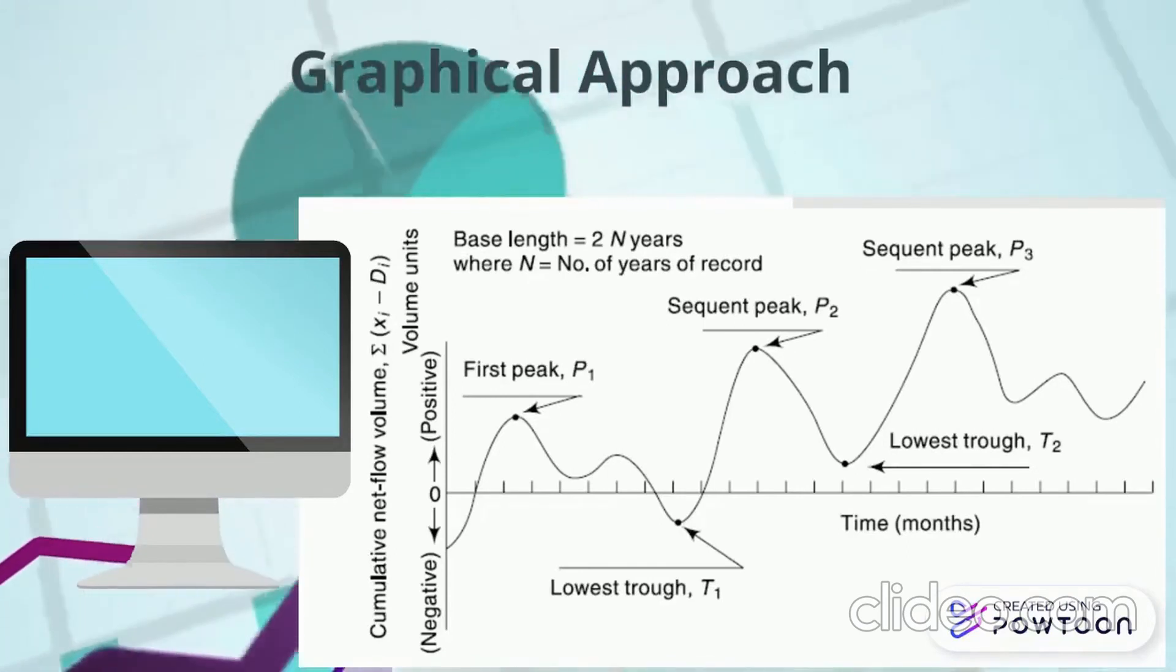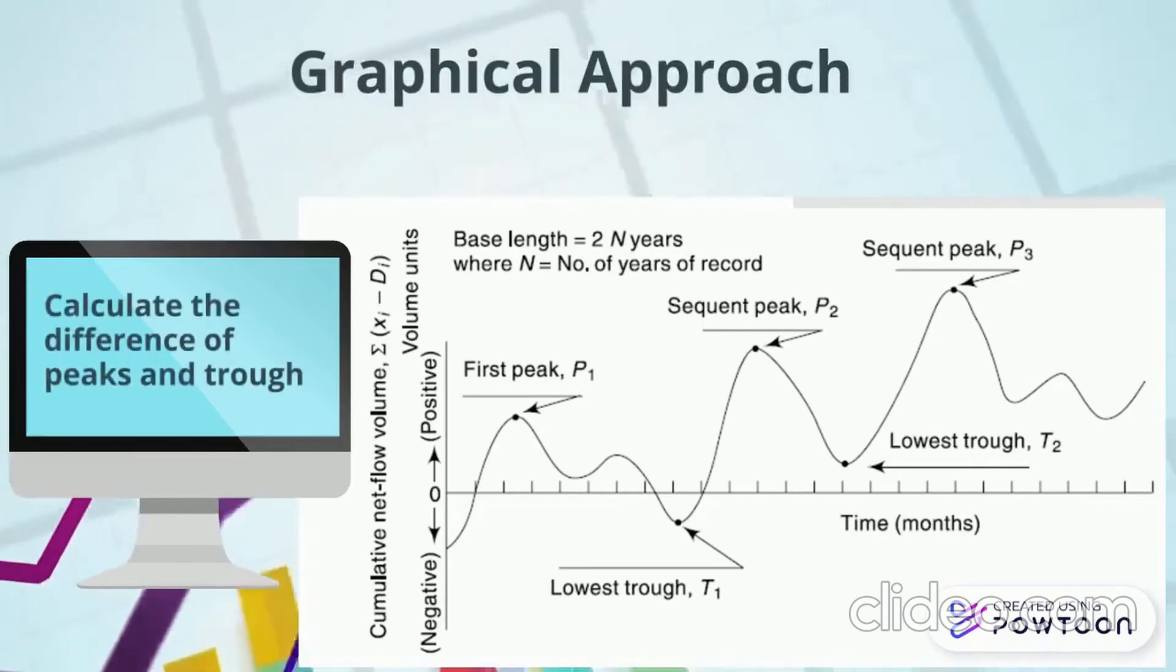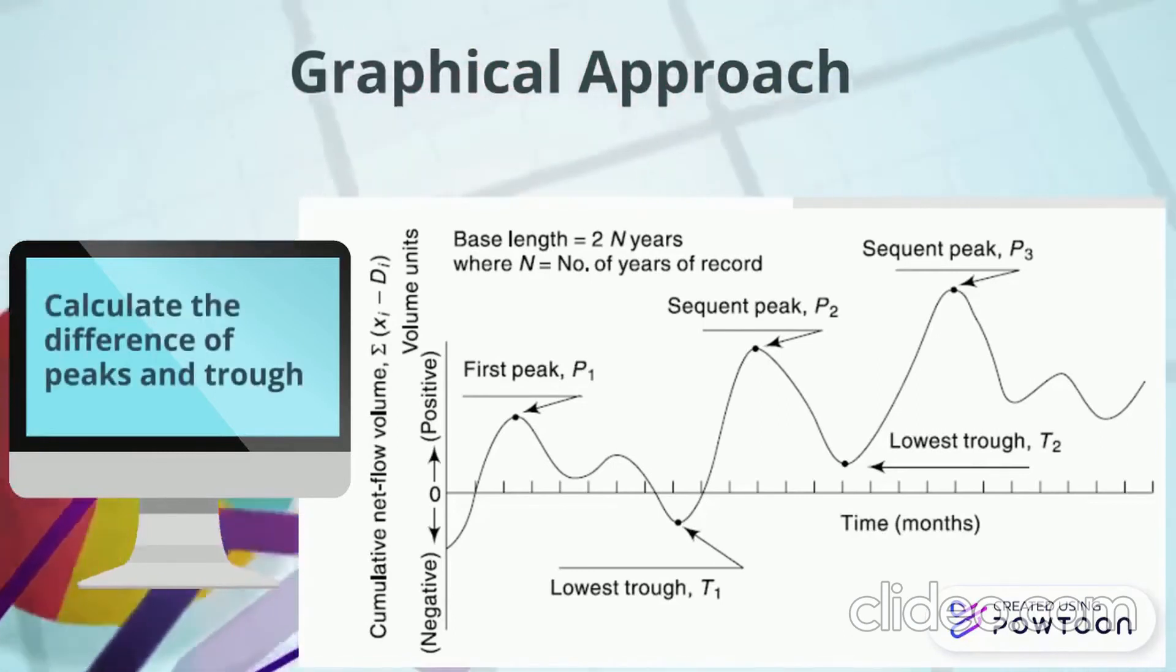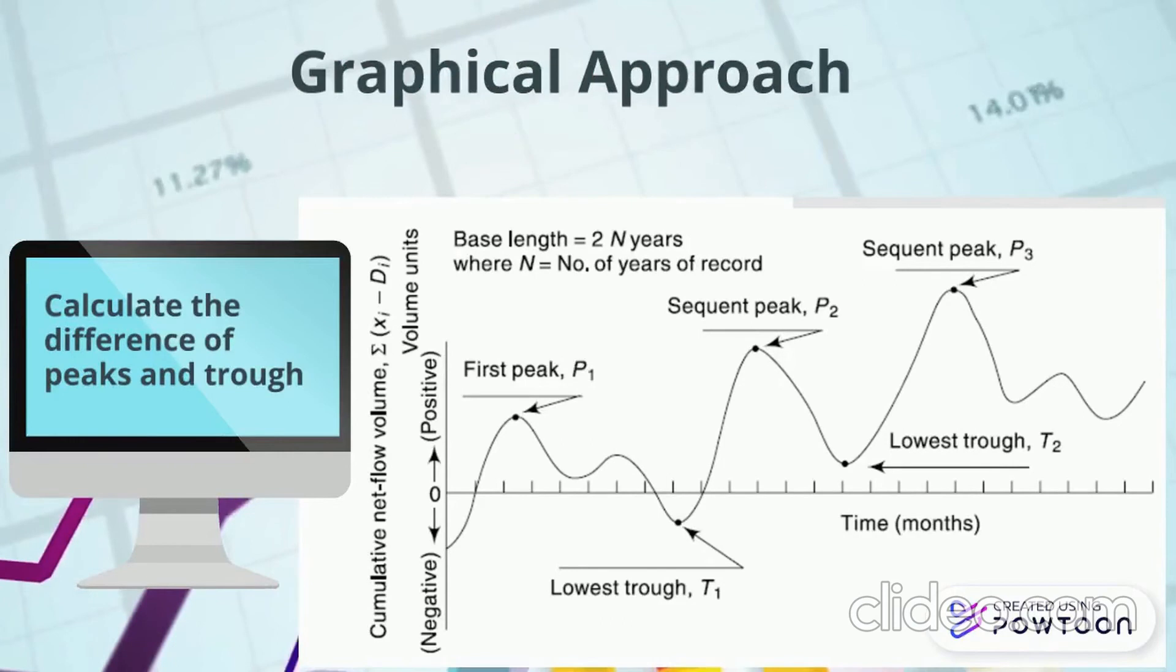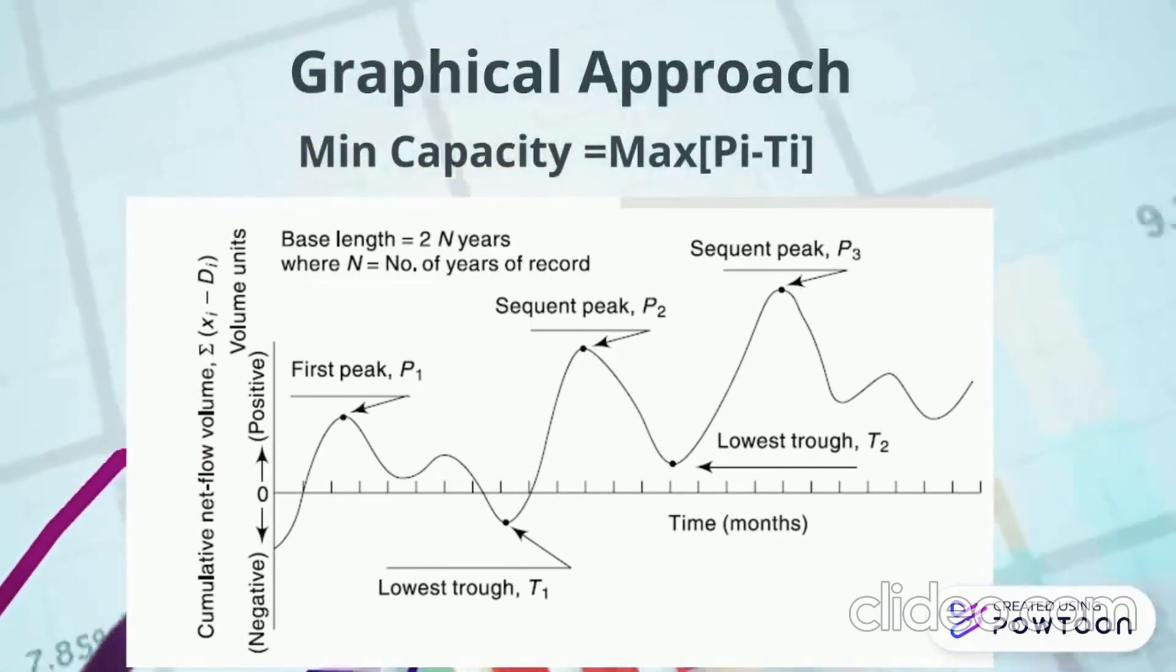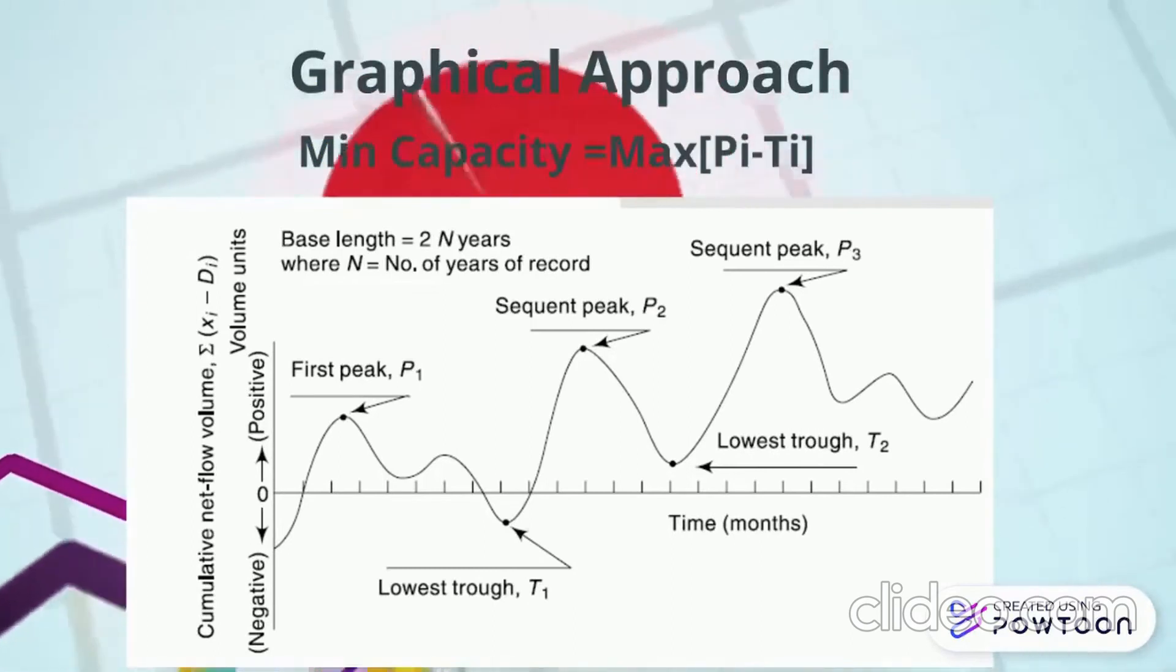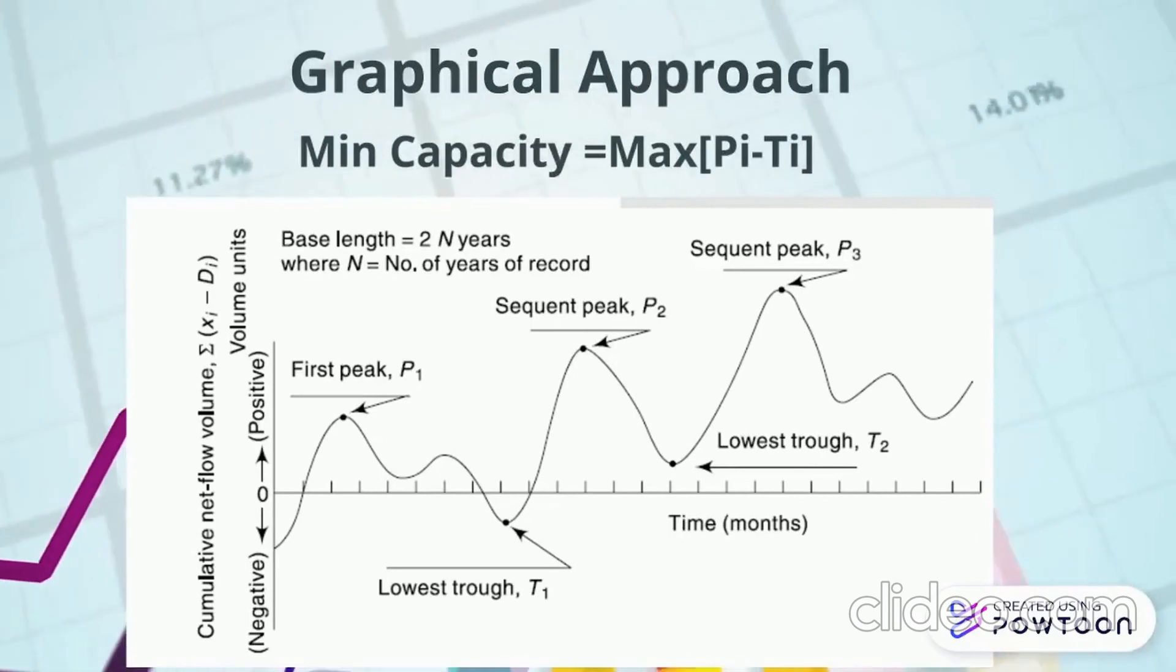And now, after you have identified the peaks and troughs, your next job is to calculate the difference between these two, between the consecutive peaks and troughs. So, P1 minus T1, then next is P2 minus T2, and up to Pj minus Tj. And then you will say that the minimum capacity, minimum storage capacity that a reservoir should have, is equal to the maximum of this difference, so say that P5 minus T5 is maximum out of all of these differences, then the minimum capacity that the reservoir should have, should be greater than P5 minus T5.